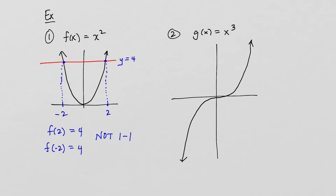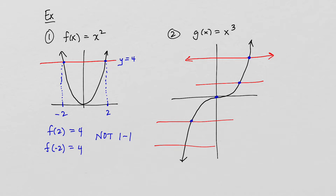The function g of x equals x cubed is a one-to-one function. Any horizontal line that you draw is only going to intersect this function one time, so it satisfies the horizontal line test. The abbreviation for saying that a function is one-to-one is simply writing 1-1. So x squared is not one-to-one, and x cubed is one-to-one.